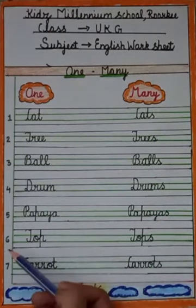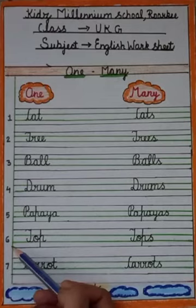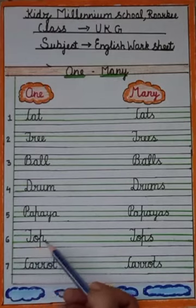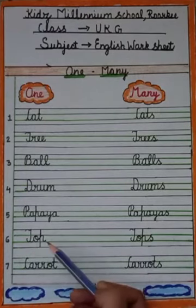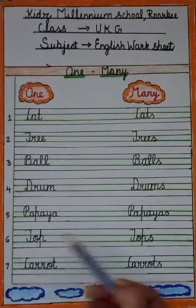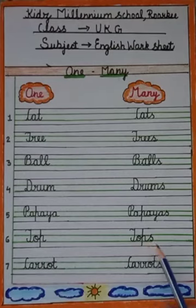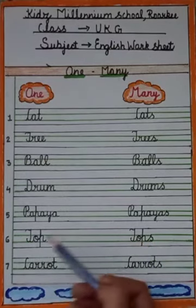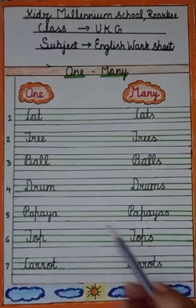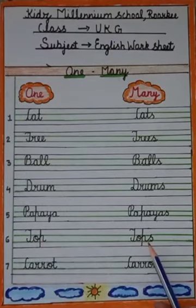Now the next one is t-o-p, top. And many of top is t-o-p-s, tops. Ek top — ek se zyada tops.